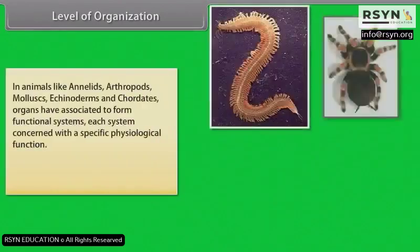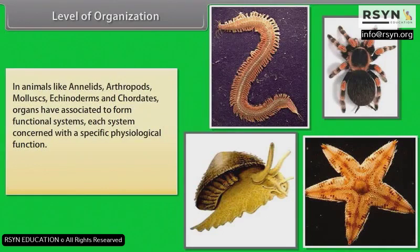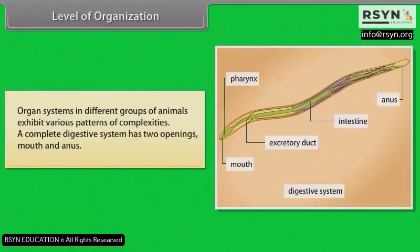In animals like annelids, arthropods, mollusks, echinoderms and chordates, organs have associated to form functional systems, each system concerned with a specific physiological function. This pattern is called organ system level of organization. Organ systems in different groups of animals exhibit various patterns of complexities.